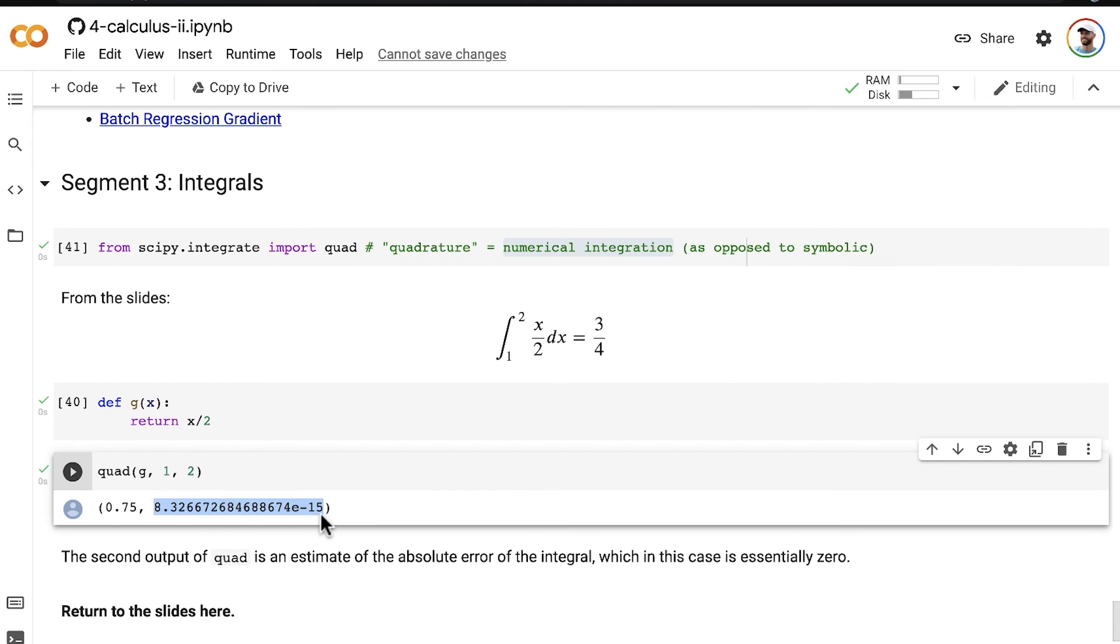very small amount, and it typically is. This corresponds to 8.3 times 10 to the negative 15 of error, definitely negligible. And we can be confident that this 3 quarter result is accurate. So,